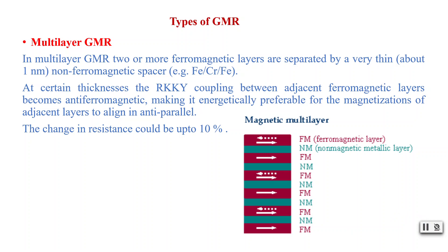RKKY coupling is the mechanism by which coupling occurs between localized inner d- or f-shell electron spins in a metal, through interaction via the conduction electrons. This makes it energetically preferable for the magnetizations of adjacent layers to align in anti-parallel, and in this case the change in resistance could be up to 10 percent.